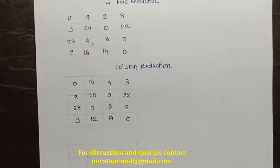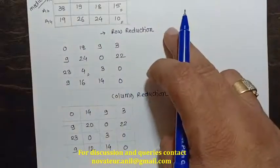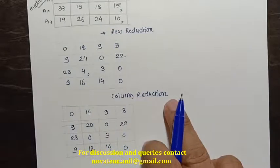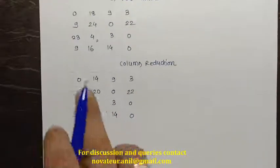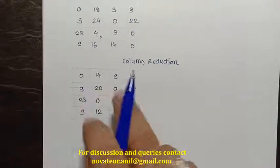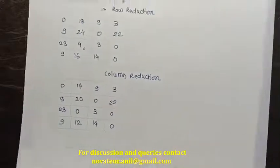To solve the assignment problem, we first do row reduction, then column reduction. Once we confirm there is at least one zero in each column, we are ready to perform the third step.